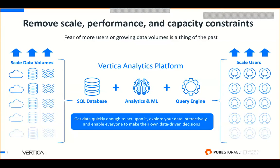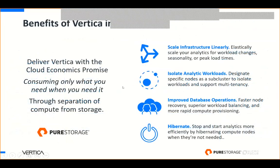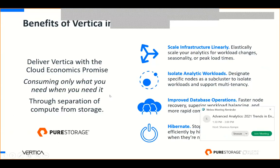Separation of compute and storage is becoming table stakes in modern data analytical platforms. But this capability is often limited just to the cloud. Many organizations say new workloads will go to the cloud, but a lot of workloads will also reside in on-premises data centers or hybrid environments — they don't want to sacrifice cloud capabilities on-premises. That's what Vertica EON Mode does. It's a separate compute and storage architecture that uses S3 as the storage layer, delivering cloud economics on all major clouds, and also on-premises by virtue of Pure Storage.